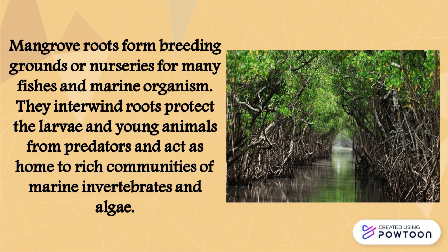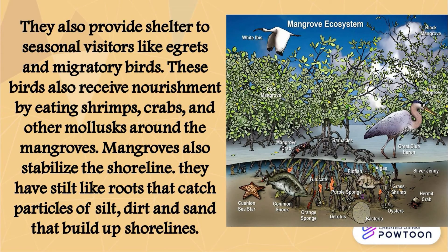Mangrove roots form breeding grounds or nurseries for many fishes and marine organisms. Their intertwined roots protect the larvae and young animals from predators and act as a home for rich communities of marine invertebrates and algae. They also provide shelter to seasonal visitors like egrets and migratory birds. These birds also receive nourishment by eating shrimps, crabs, and other mollusks around the mangroves.